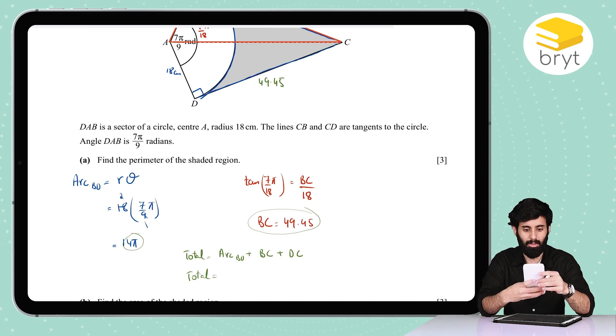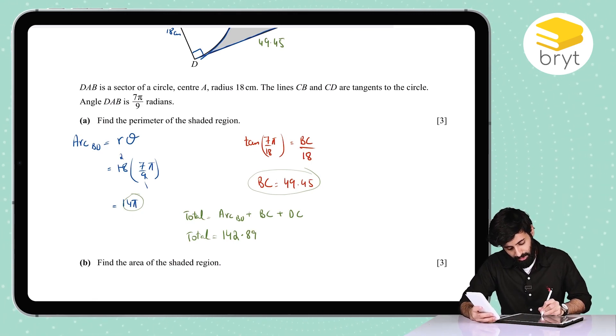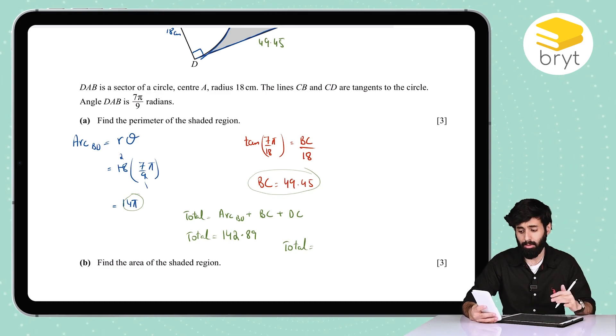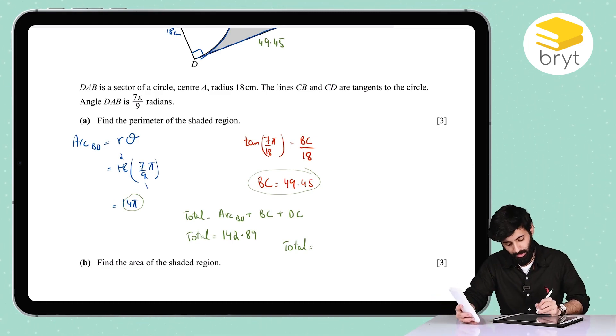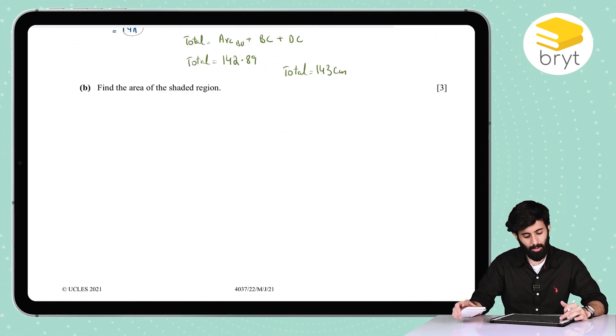In it, I'm going to add this 14π right here, so plus 14 along with π. Now we're looking at 142.89, but remember, we have to give our final answer correct to three significant figures. So our answer is going to be either 142 or 143, but since it's closer to 143, it has to be 143. And since it's perimeter, so we'll write centimeter.